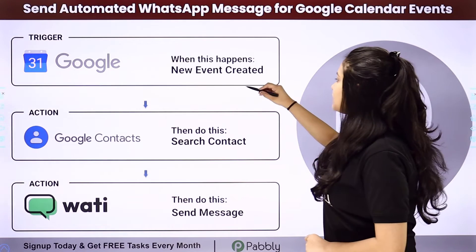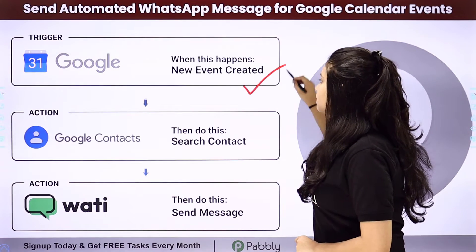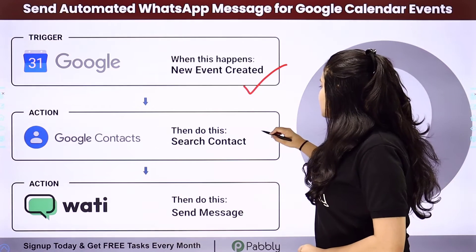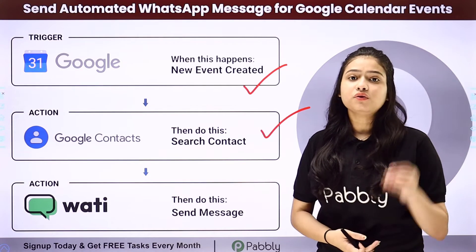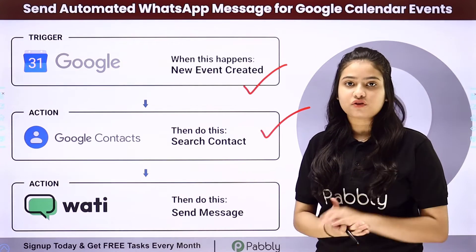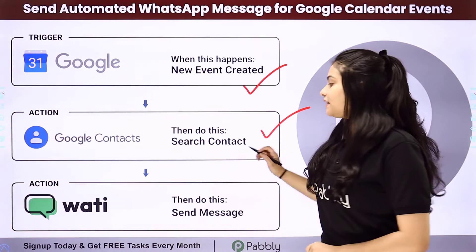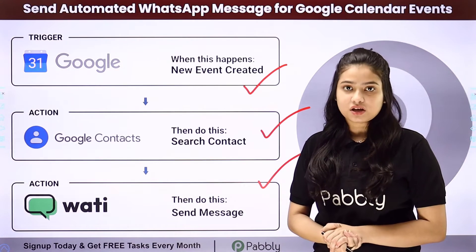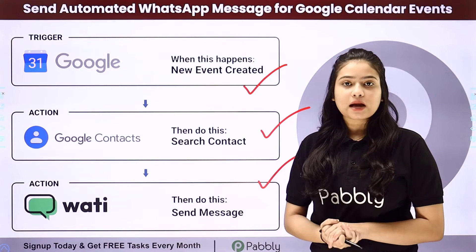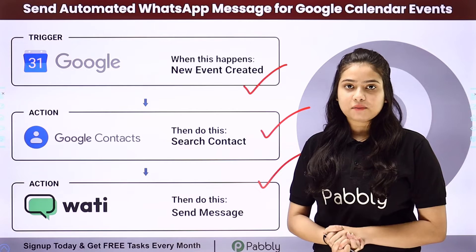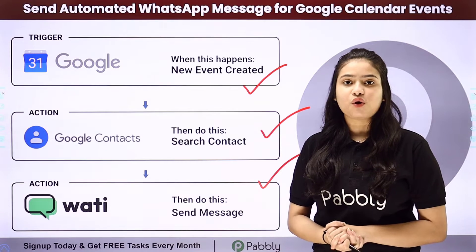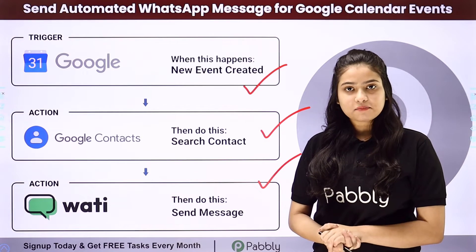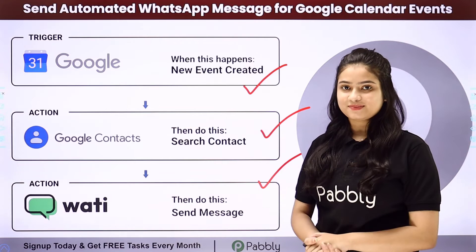Here we have Google Calendar as our trigger, through which we are going to create a new event. Then we have Google Contacts in our action step, through which we are going to fetch the contact details. Then we have Vati, through which we are going to send the WhatsApp template message. We are going to connect all these applications using Pabbly Connect. Let me take you to my screen.